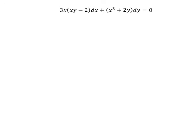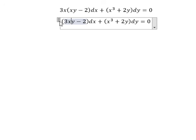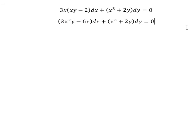So now I will show you how to solve 3x(xy - 2)dx + (x³ + 2y)dy = 0. Next, I will set P equal to this term and Q equal to this term.